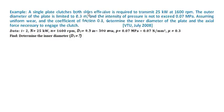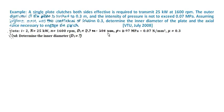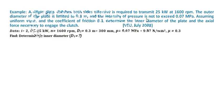A single plate clutch both side effective, that is i equal to 2, is required to transmit 25 kilowatt at 1600 rpm. The outer diameter of the plate is limited to 0.3 meter, which is converted into millimeters.